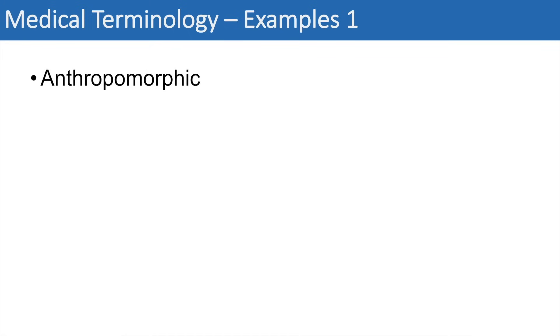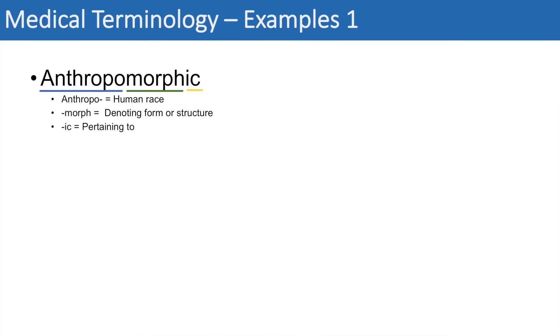Now that we've learned those prefixes and suffixes, let's put them to practice. The first example is anthropomorphic. When we look at a medical term, we break it into recognizable pieces. First, anthropo means human race. Then morph means denoting form or structure. And -ic means pertaining to. So put together, it means pertaining to a form or structure of the human race — really meaning having human characteristics, pertaining to something that resembles a human.